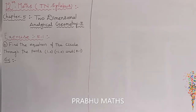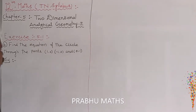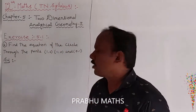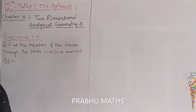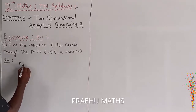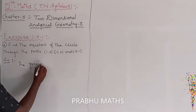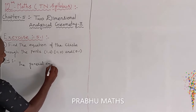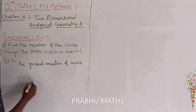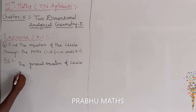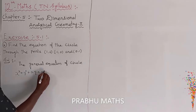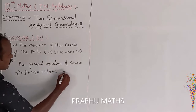This is the sixth sum where X is 5.1. Find the equation of the circle passing through three points: the first point, the second point, and the third point. To find the circle equation, first of all we use the general equation of a circle, which is: X squared plus Y squared plus 2GX plus 2FY plus C equals 0.